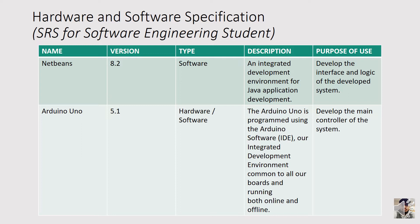Similarly for Arduino Uno, which many IoT project students use: put the name as Arduino Uno, version 5.1, and type as both hardware and software — because it is a hardware that also has its own module for settings. Describe it as programmed using IDE software, running both online and offline. The purpose is to develop the main controller of the system.